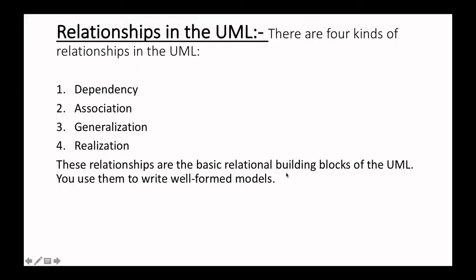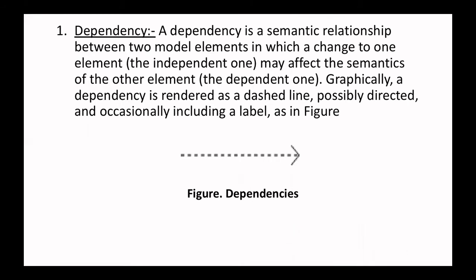Now I am moving to the next element, which is relationships in UML. There are four kinds of relationship in UML. First one is dependency, second one is association, third one is generalization, and fourth one is realization. These relationships are the basic relational building blocks of UML. You use them to write well-formed models for a particular design.